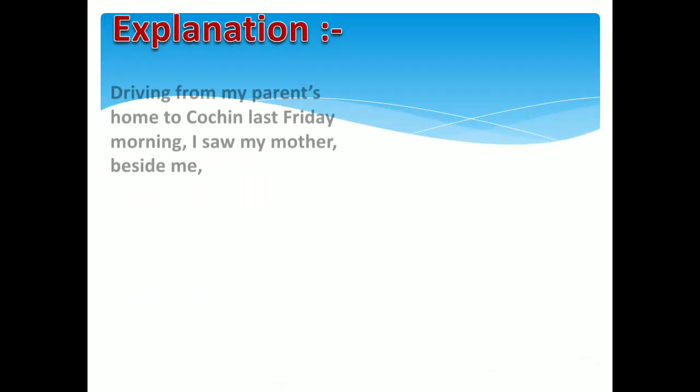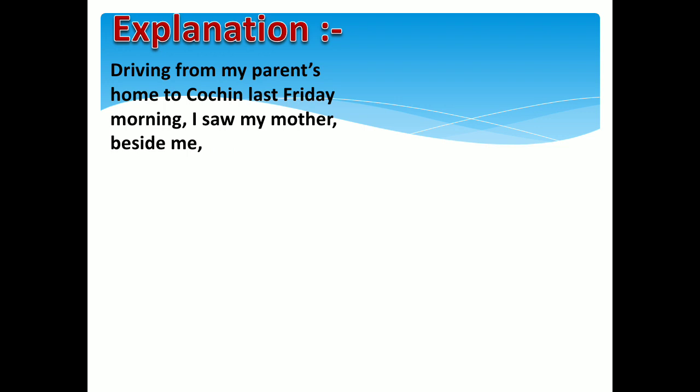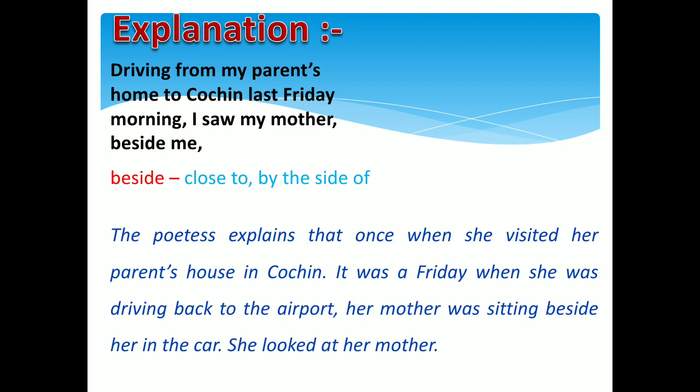Students, let's start the explanation of the poem. The poetess says: 'Driving from my parents' home to Cochin last Friday morning, I saw my mother beside me.' The poetess explains that once when she visited her parents' house in Cochin, it was a Friday, and when she was driving back to the airport, her mother was sitting beside her in the car.